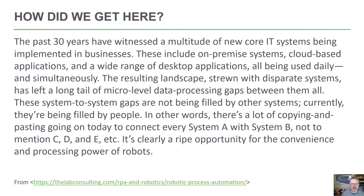If you think about the last 30 years, we've witnessed a multitude of new core IT systems being implemented in businesses. These include on-premise systems, cloud-based systems, desktop applications — maybe some OnBase, maybe some Brainware — things like that. They're all being used daily simultaneously. The resulting landscape strewn with disparate systems has left a long tail of micro-level data processing gaps between all of them. Some systems integrate, but not always completely holistically. There's always some manual work left between the systems that we ask employees to do. These system-to-system gaps are not being filled by other systems currently — they're being filled with people. There's a lot of copying and pasting going on today to connect system A to system B, not to mention systems C, D, E, and so on. This is a ripe opportunity for the convenience and processing power of robots.